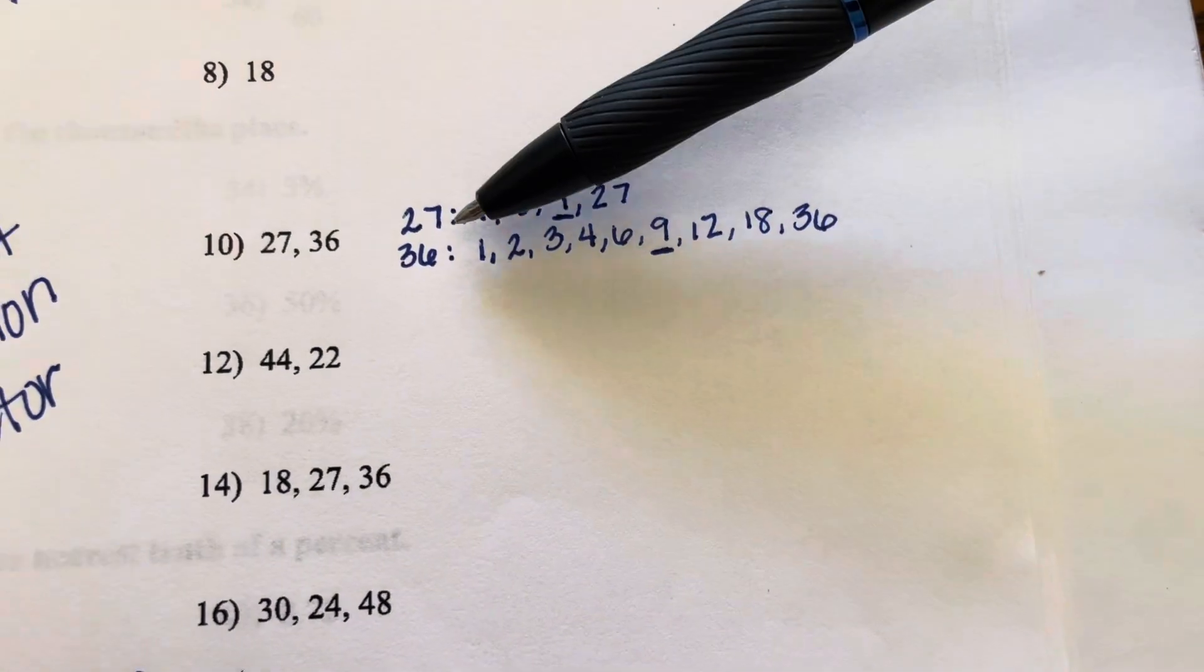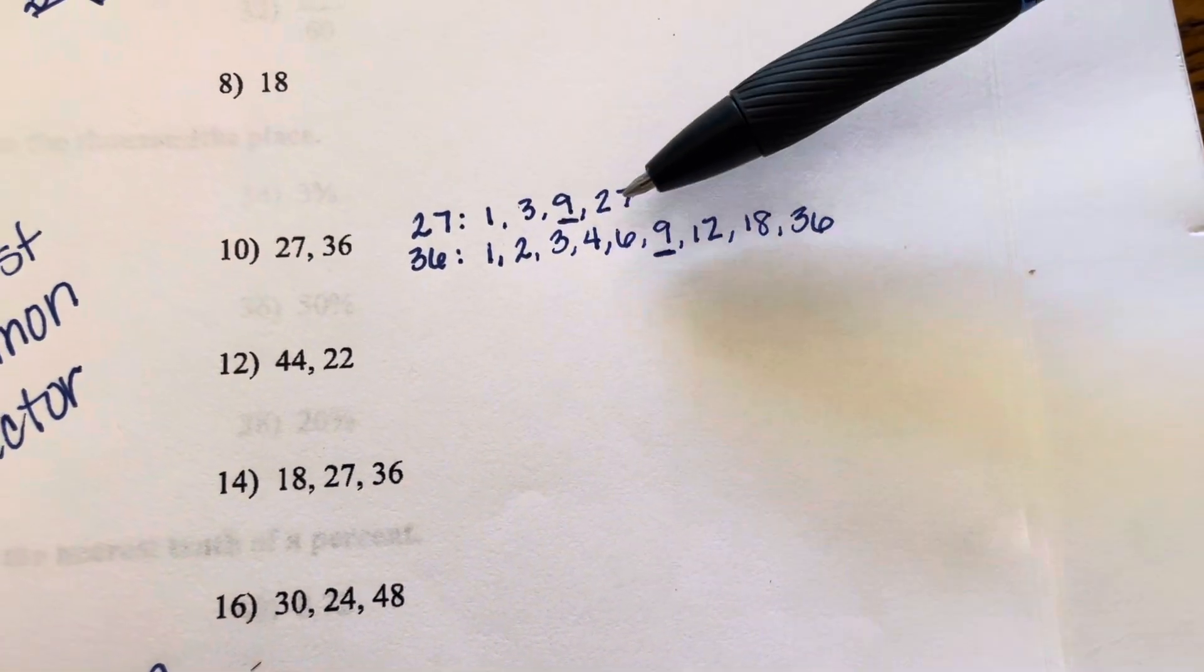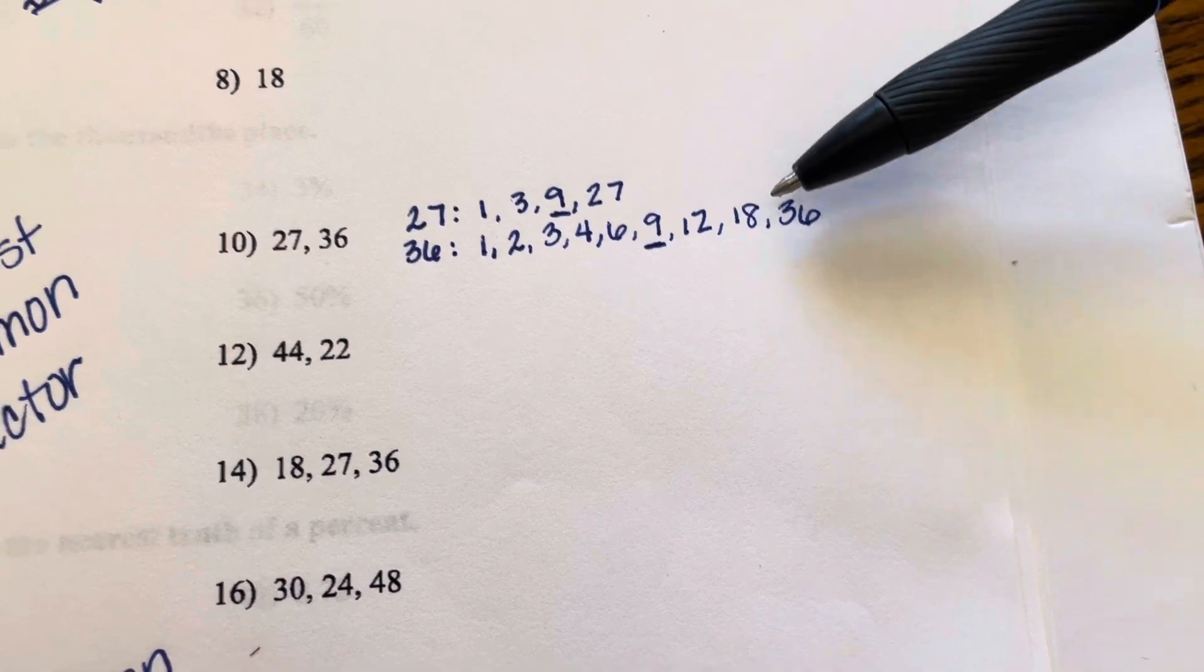36 has more factors. We have 1, 2, 3, 4, 6, 9, 12, 18, and 36.